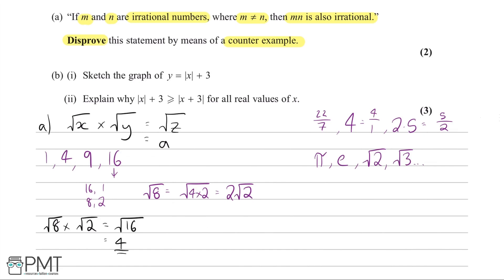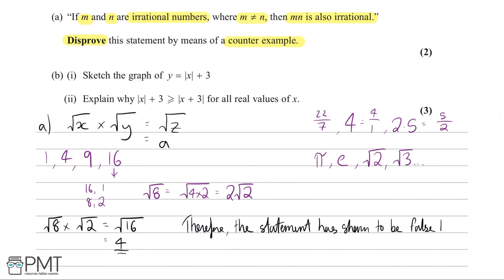We've disproved the statement by means of counter-example, but we're not done — that gets us only one mark. For the second mark, we need a concluding sentence: 'Therefore, the statement has been shown to be false by means of counter-example.' Notice the wording mirrors the question. The marking awards one mark for the counter-example and one mark for the conclusion.